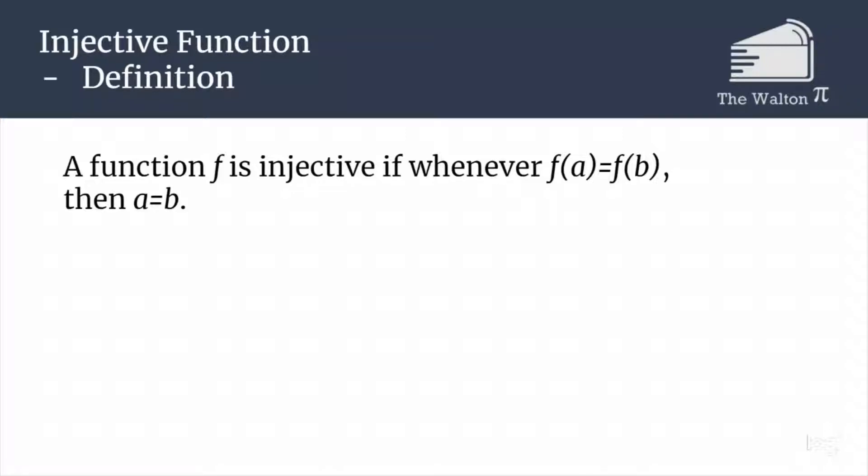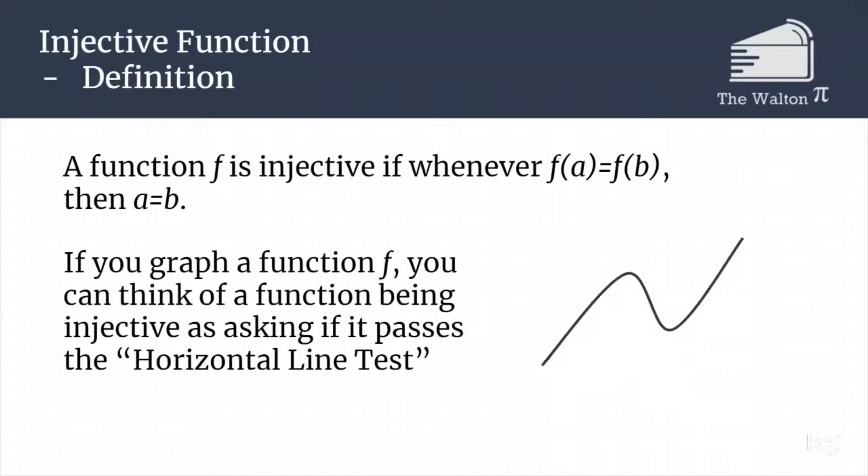If we're looking to see if a function is injective, one way you can think about this is thinking if it passes what sometimes people call the horizontal line test. That is where you take any horizontal line and you ask yourself, does any line intersect this more than one time? If any line intersects the graph more than once, it is not going to be injective. Because here in this diagram, we have three different points that all have the same output from the function. This would not be injective because just having the same output does not guarantee that we had the same input.